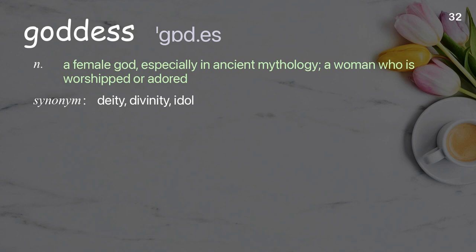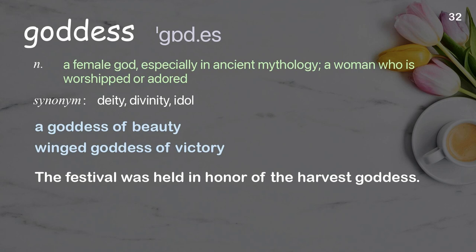Goddess: A female god, especially in ancient mythology; a woman who is worshipped or adored. Examples: a goddess of beauty, winged goddess of victory. The festival was held in honor of the harvest goddess.